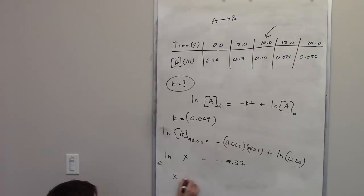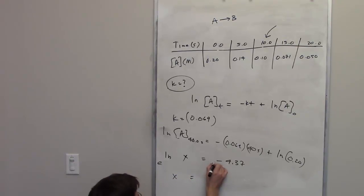The e and the ln cancel each other out. If you take e on the other side and raise it to the negative 4.37, you end up getting an answer of 1.27 times 10 to the negative 2 molar.